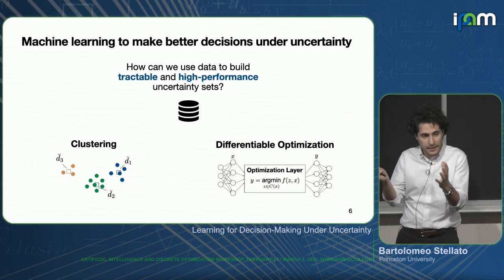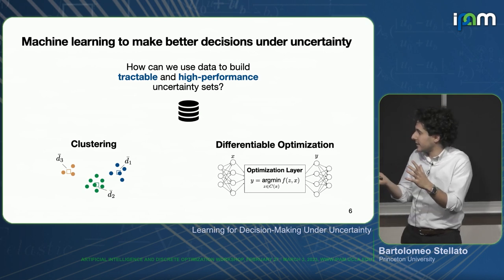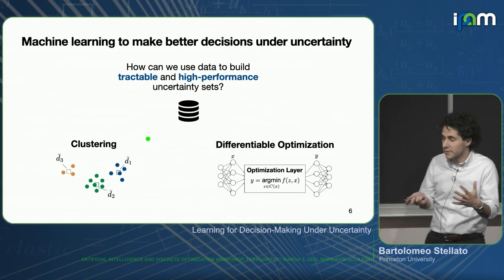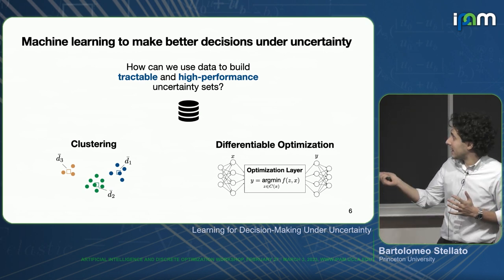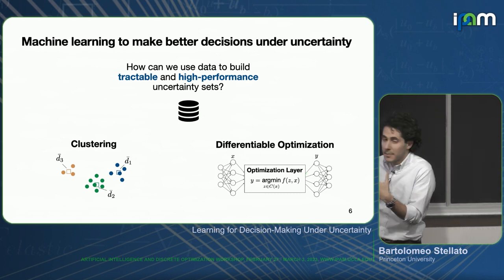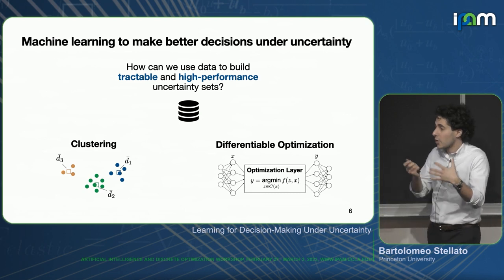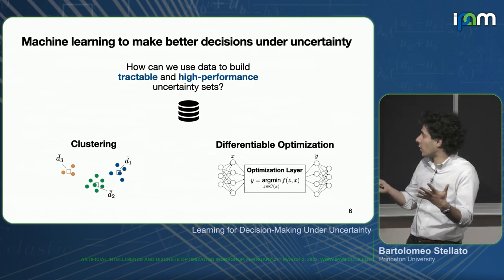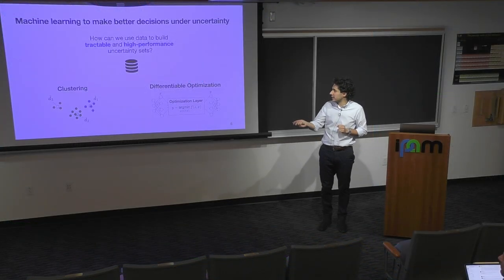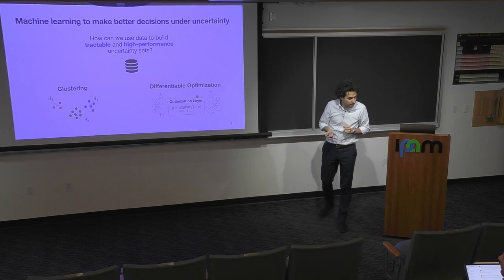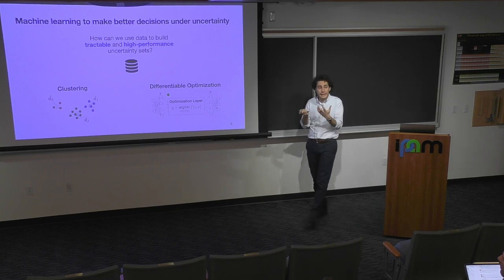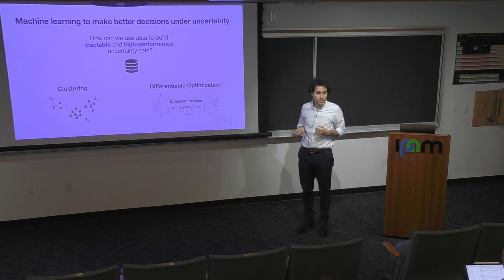I will talk about two different techniques. One is more related to machine learning clustering, which is very commonly used in various applications of unsupervised learning. Another approach is related to differentiable optimization, where we can embed optimization problems inside layers of computational graphs that could be neural network architectures or bi-level or multi-level optimization problems. I will try to convince you that robust optimization can really gain a lot by using data-driven approaches like these.